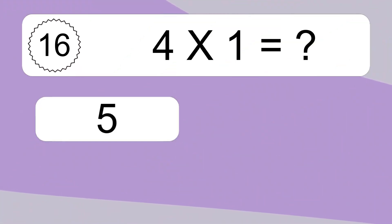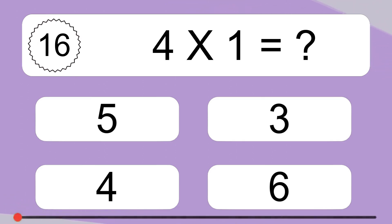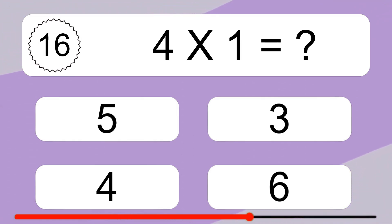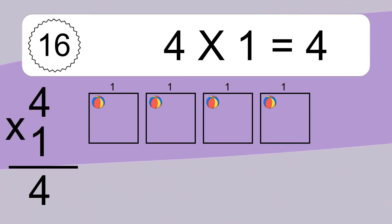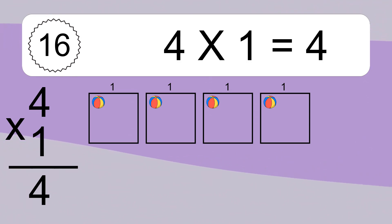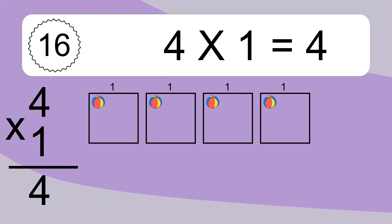4 times 1 equals what? 4 times 1 equals 4. We have 4 boxes, and each box has 1 colorful ball inside. If you count all the balls in all the boxes together, you will have 4 times 1 balls. This equals 4 balls.